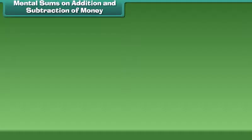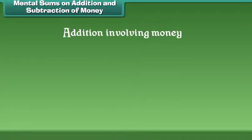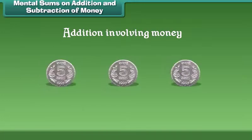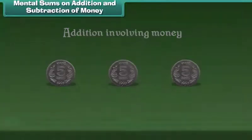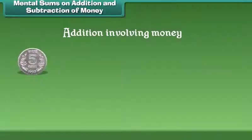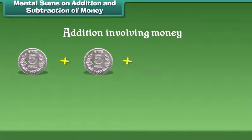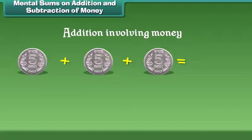Now let us learn about addition involving money. If I have 3 five-rupee coins, then can you tell me the total rupees I had? Add 5 plus 5 plus 5, which is equal to 15 rupees.